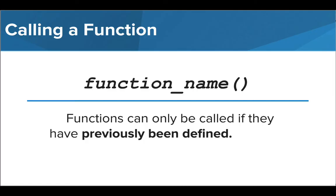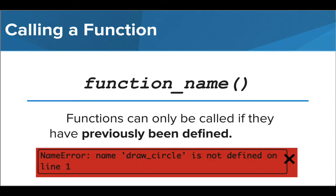To call a function that has been defined, we simply write the function name with a set of parentheses. It is important to remember that a function can only be called if it has already been defined. If we try to call a function before it has been defined, we will get an error similar to this one that tells us that the function has not been defined.